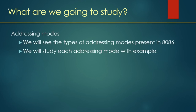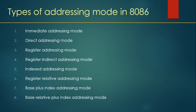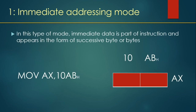So in this presentation we will study different addressing modes with examples. There are eight types of addressing modes in 8086: immediate addressing mode, direct addressing mode, register addressing mode, register indirect addressing mode, indexed addressing mode, register relative addressing mode, base plus index addressing mode, and base relative plus index addressing mode.